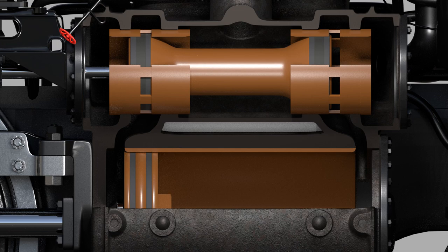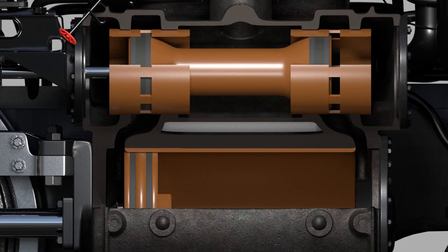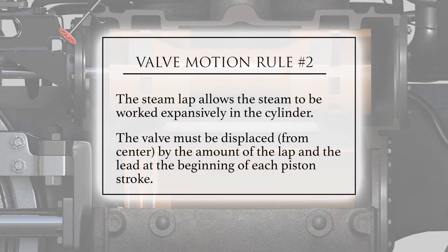It is helpful at this point to summarize the main parameters that characterize the dimensions of the valve. We can summarize the foregoing discussion of valve parameters with the second most important point of this entire video, which I will call valve motion rule number two: the steam lap allows the steam to be worked expansively in the cylinder, and the valve must be displaced from center by the amount of the lap plus the lead when the piston reaches either end of its stroke.